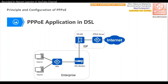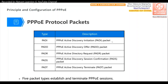The router connects to the DSLAM, which then connects to the ISP's DSLAM, and that DSLAM connects to the PPPoE server. The server and the router establish a PPPoE connection, and the PPPoE server authenticates the users in the enterprise so they can access the internet. There are five types of PPPoE protocol packets: PADI, PADO, PADR, PADS, and PADT. PADI and PADO are used to discover the PPPoE server, after which the server sends an offer to the client.